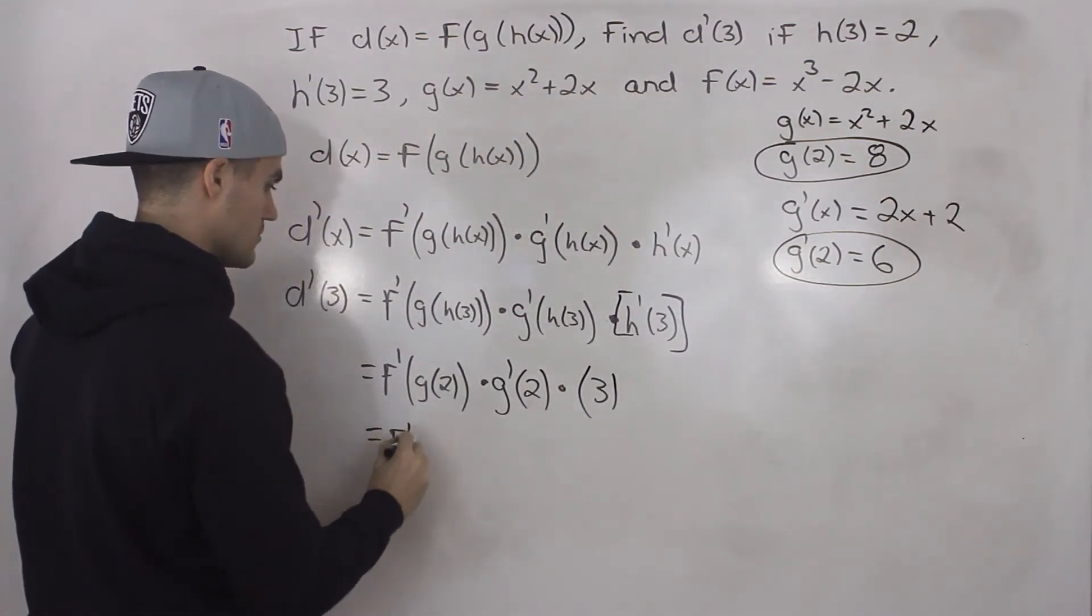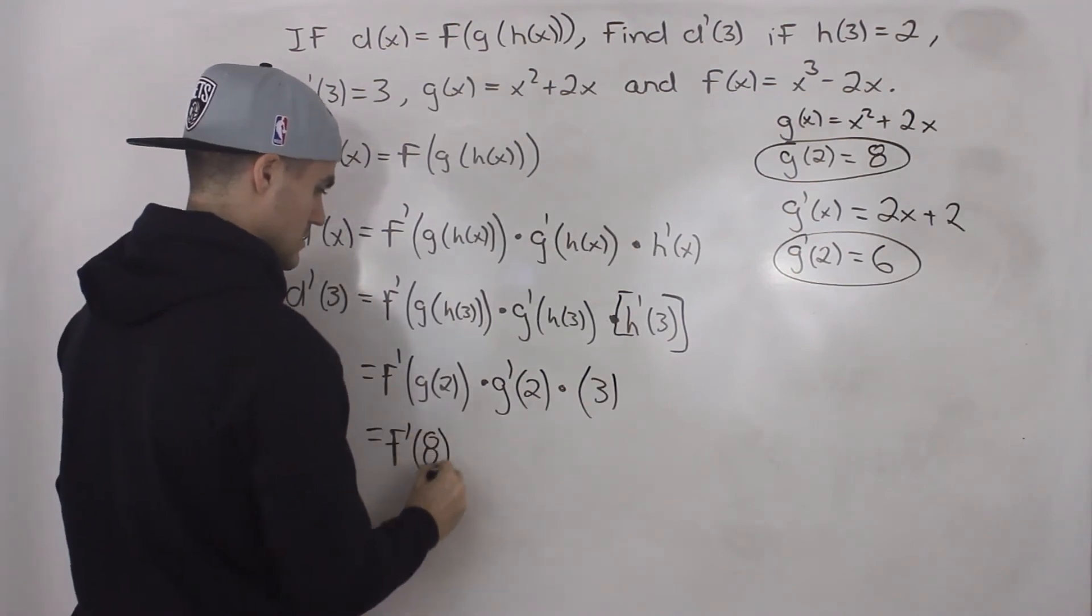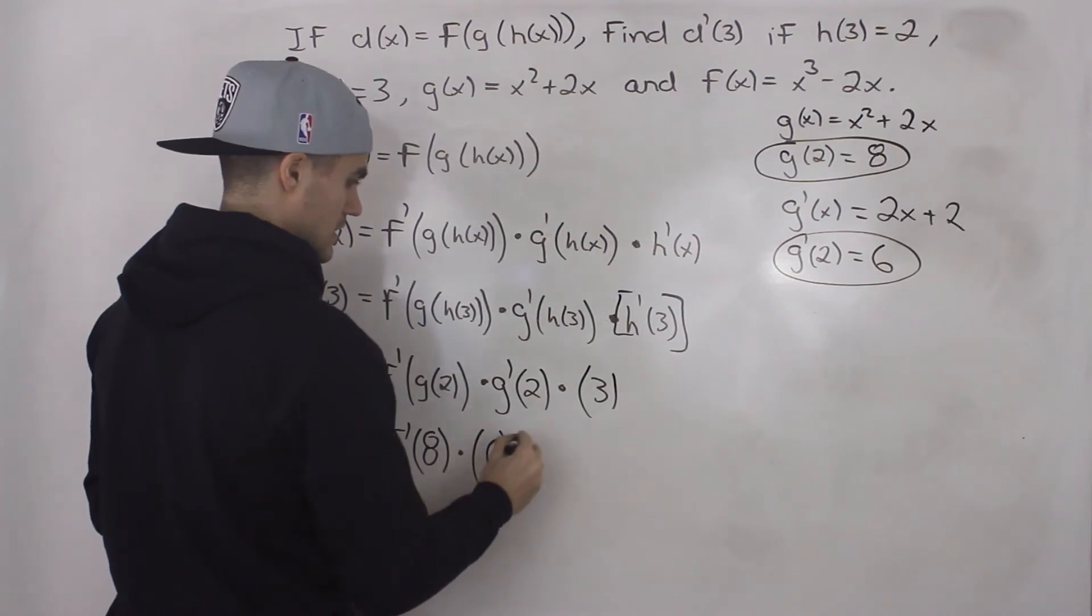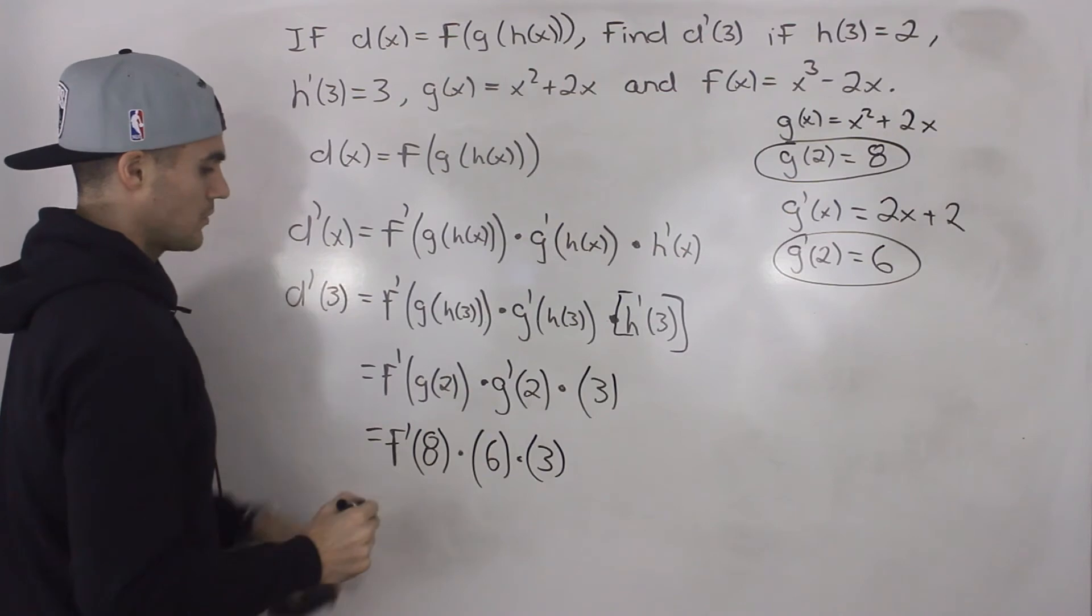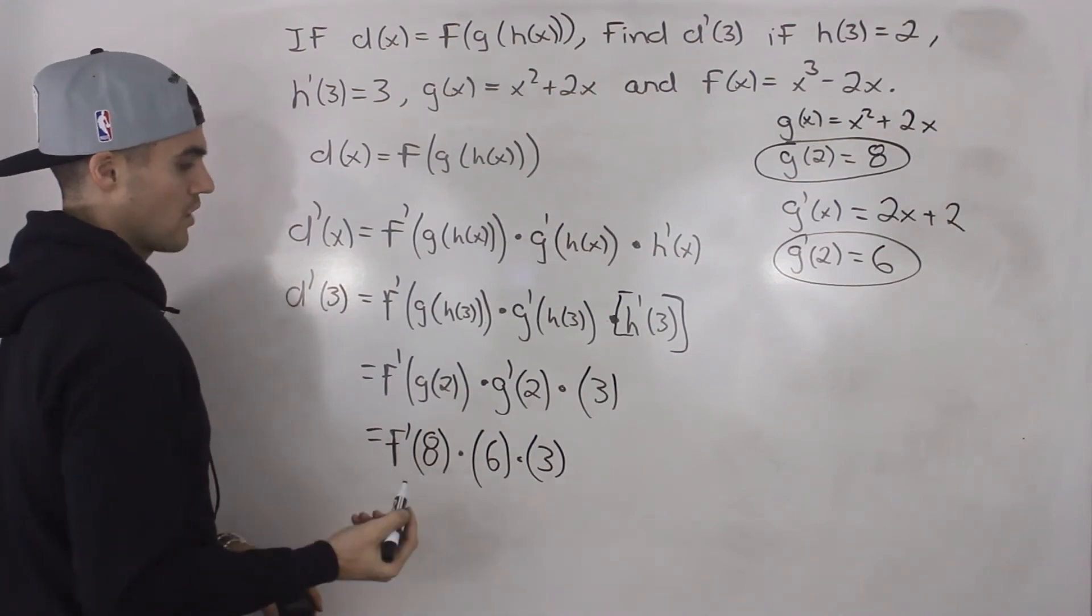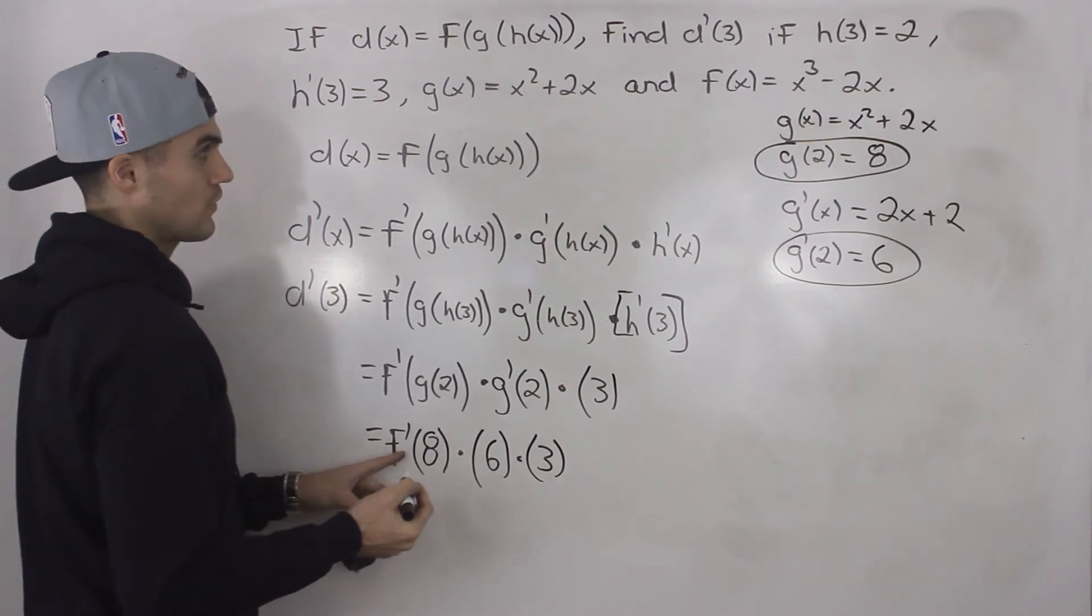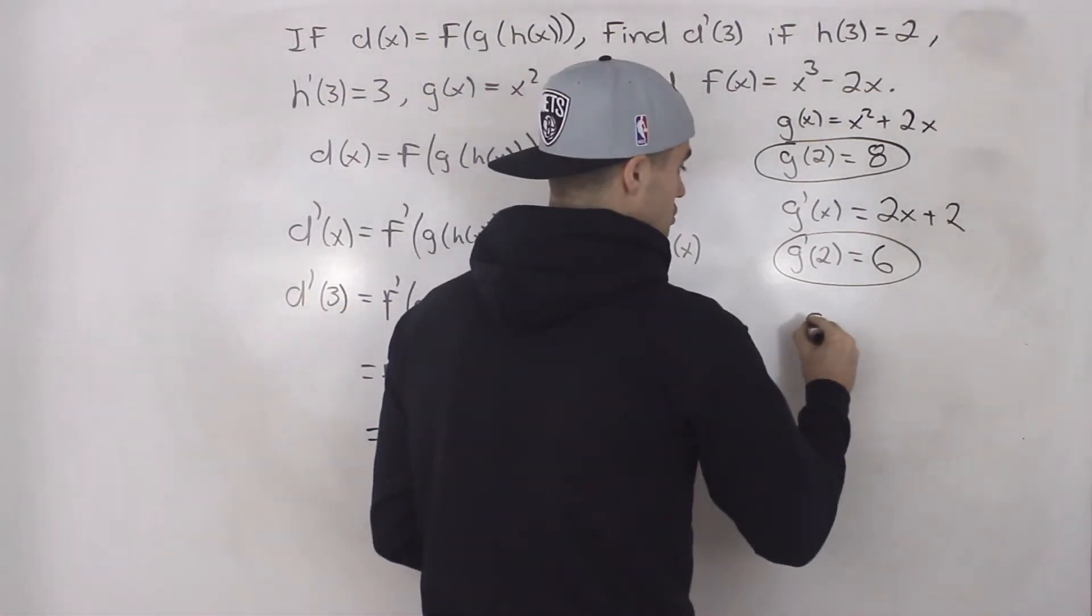So let's do that. So we'll have f prime g of 2 is 8. And then we got g prime of 2 being 6. And then this 3 is still there. So now what we have to do is find f prime of 8. And we're not given an expression for f prime of 8, but we are given the function f of x, like we were g of x.